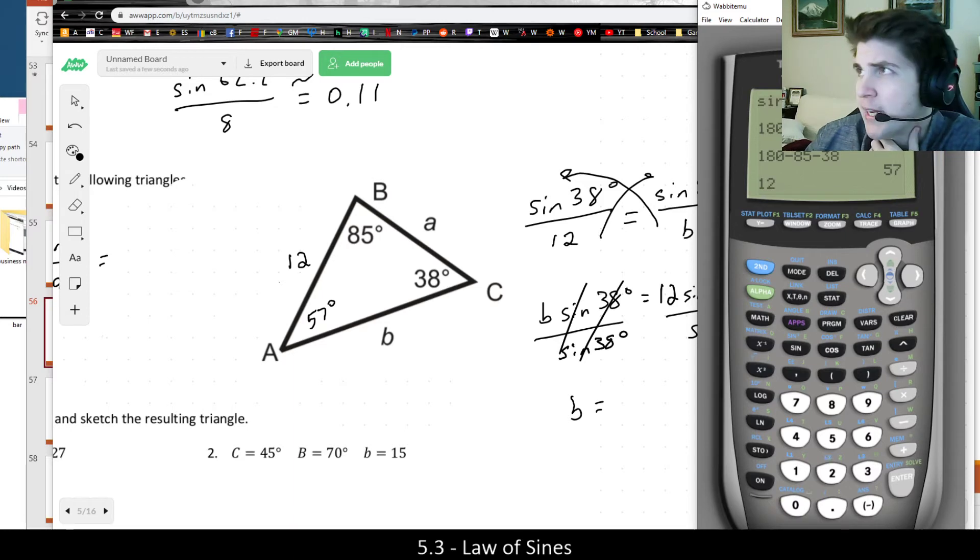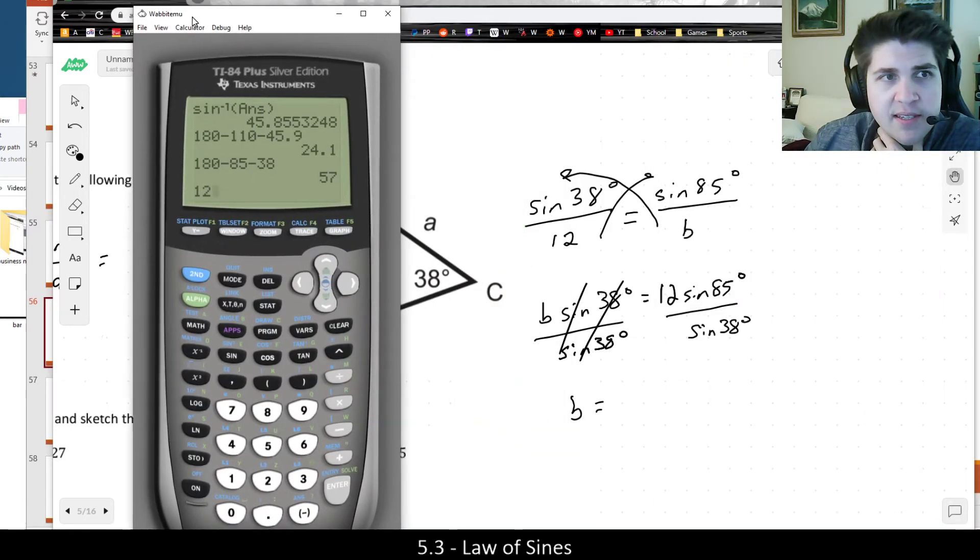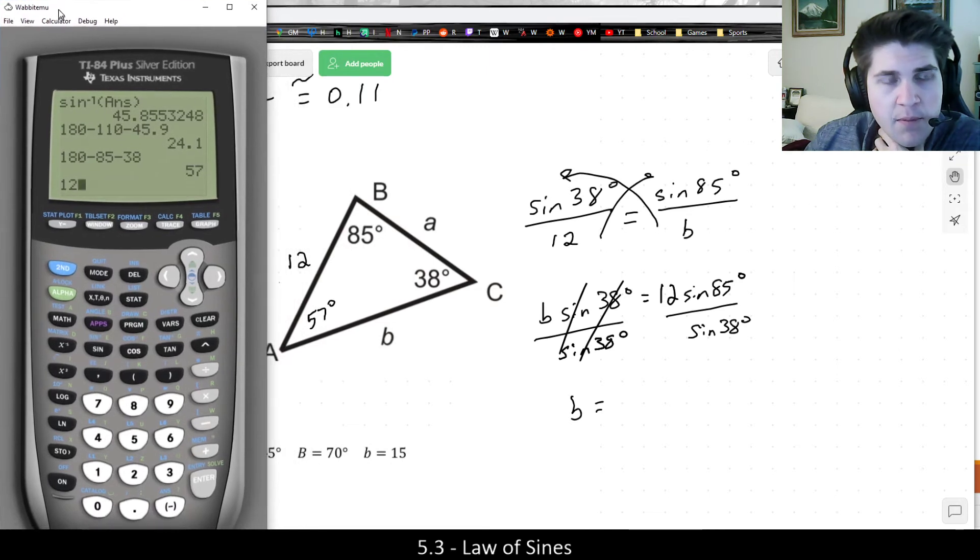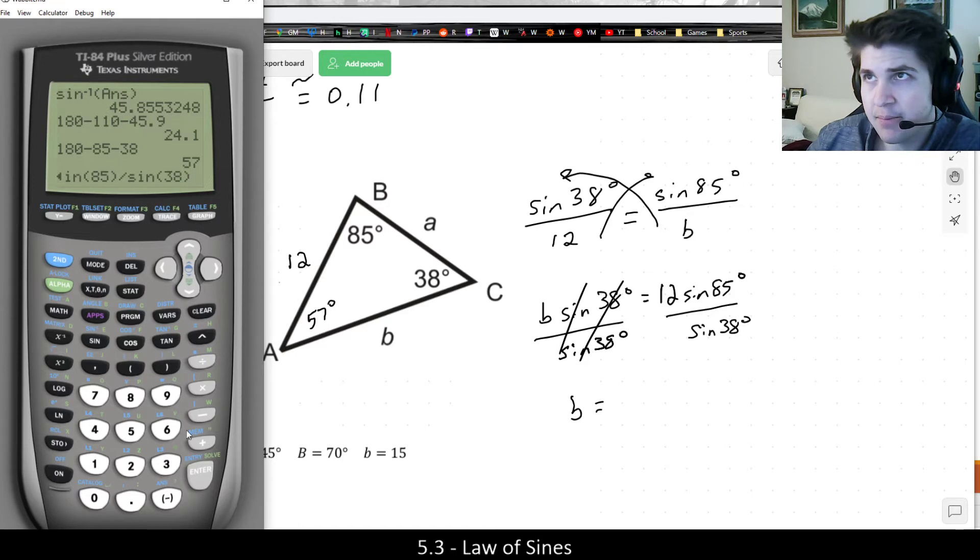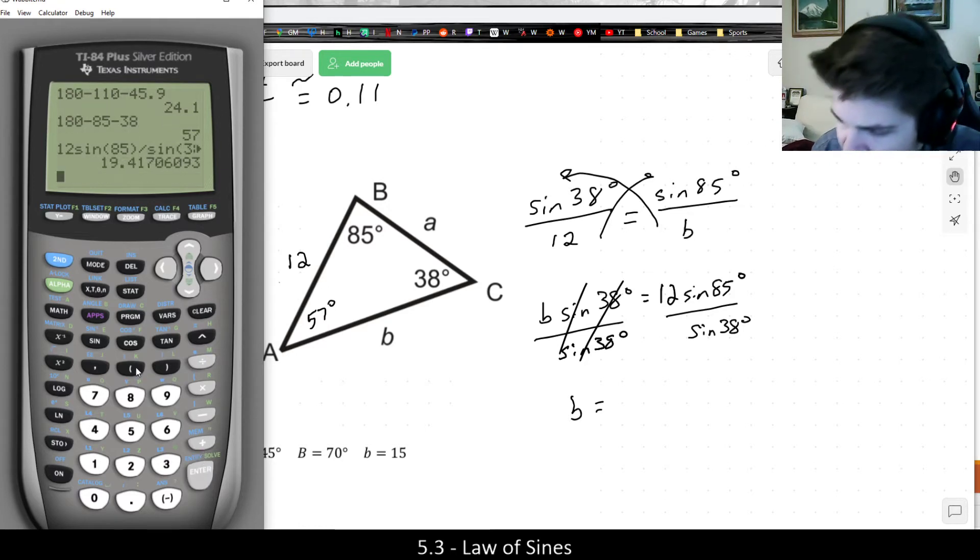And one thing that you might be wondering, because in some of the previous examples, you may have noticed me using inverse trig functions to solve these. Whereas in this example, I'm actually dividing by the whole function. So this is a question I've been asked quite a few times before: how do I know when I'm allowed to divide by sine? And how do I know when I need to take an inverse instead? Once I finish doing this math, I want to answer that question. But basically, in this case, B is approximately 19.4 units long.